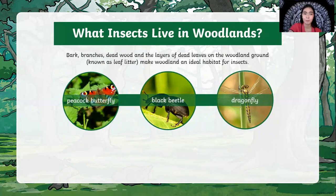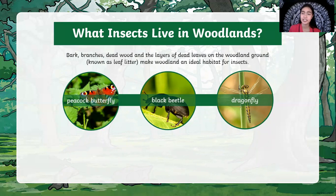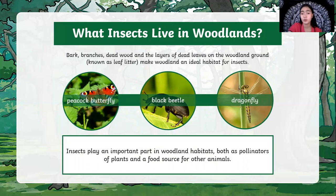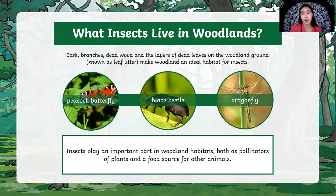What insects live in woodlands? Bark, branches, dead wood, and layers of dead leaves on the woodland ground — called leaf litter — make woodland an ideal habitat for insects. We can see a peacock butterfly, black beetle, and also dragonflies. Insects play an important role in the woodland habitat as pollinators of plants and a food source for other animals. Because of them, plants grow healthily and reproduce, and some insects also serve as food for other animals.